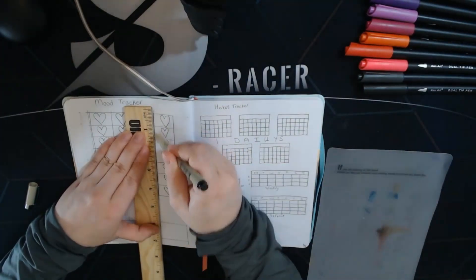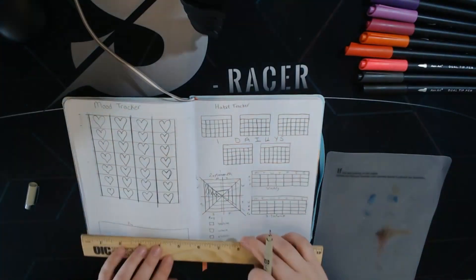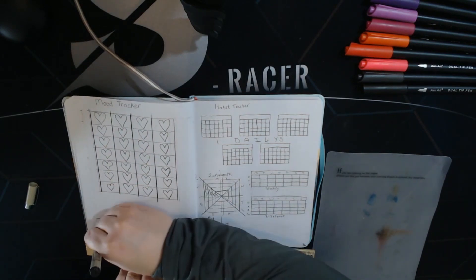So the next page is the mood tracker. I drew these lines. Once I got done, started on the horizontal lines and realized I did not mean to do that, so I'm going to do the key instead.